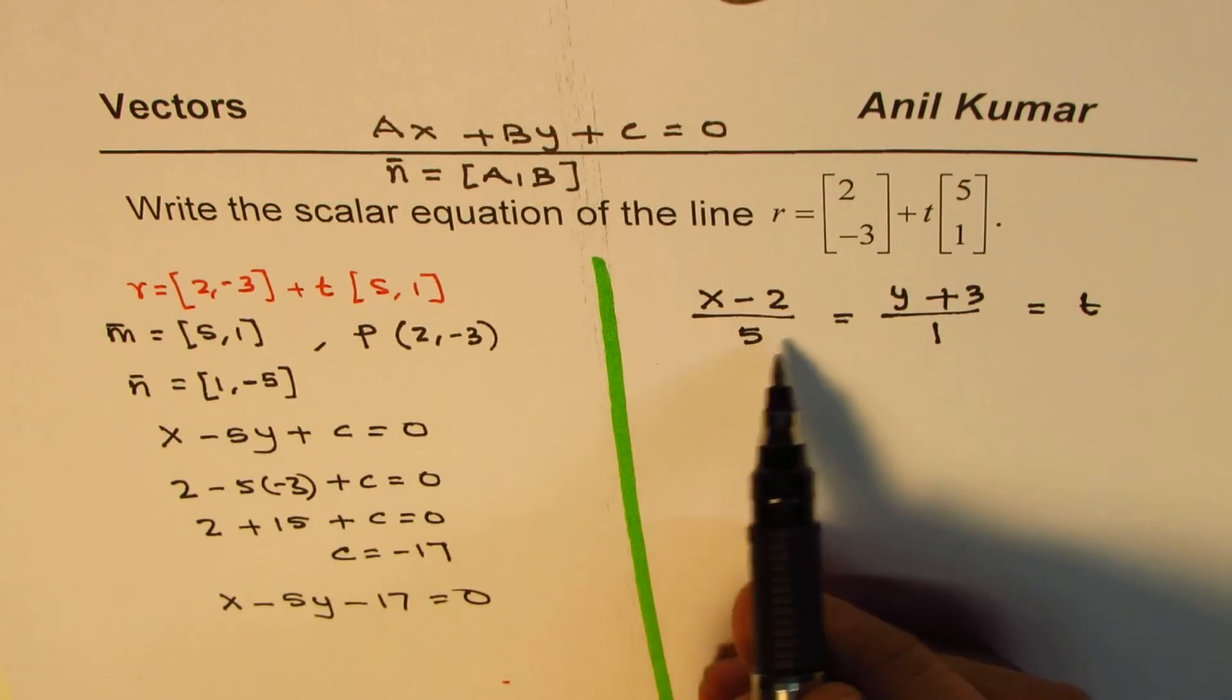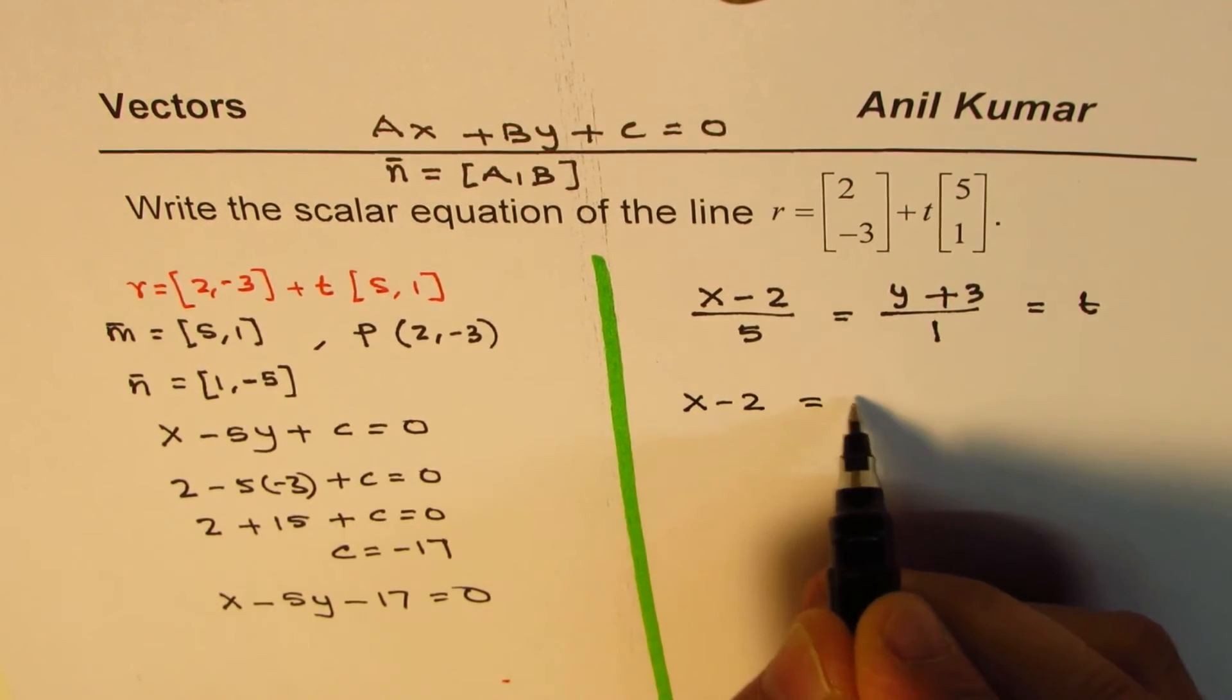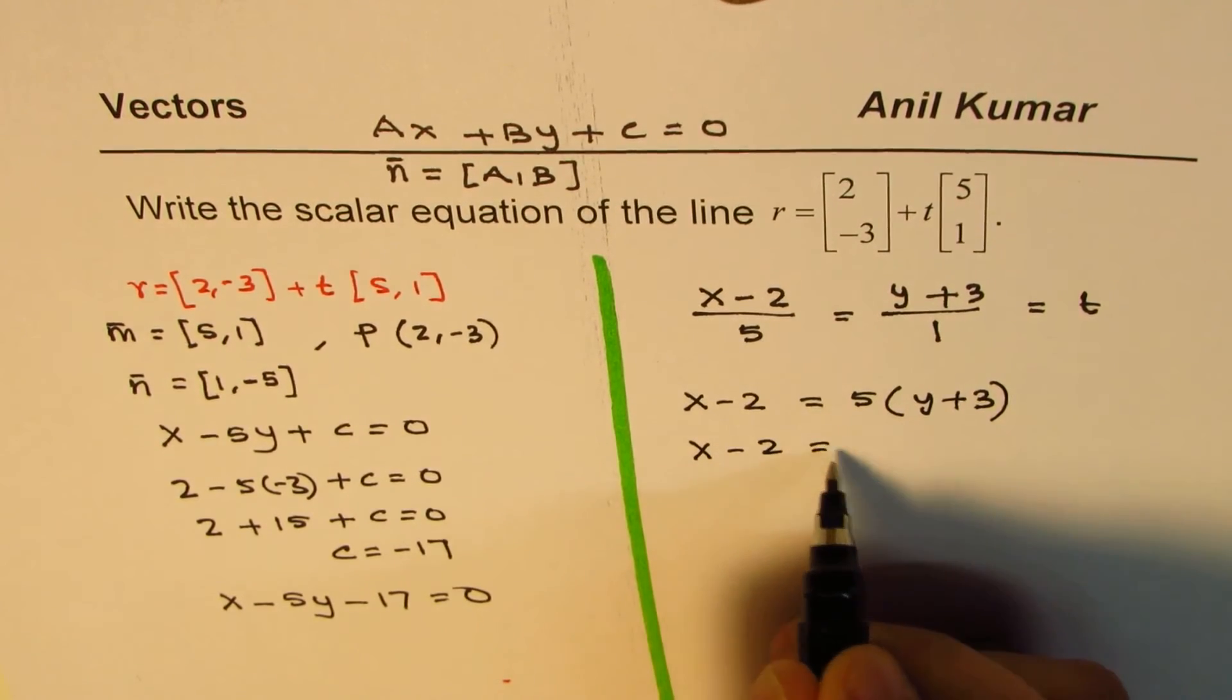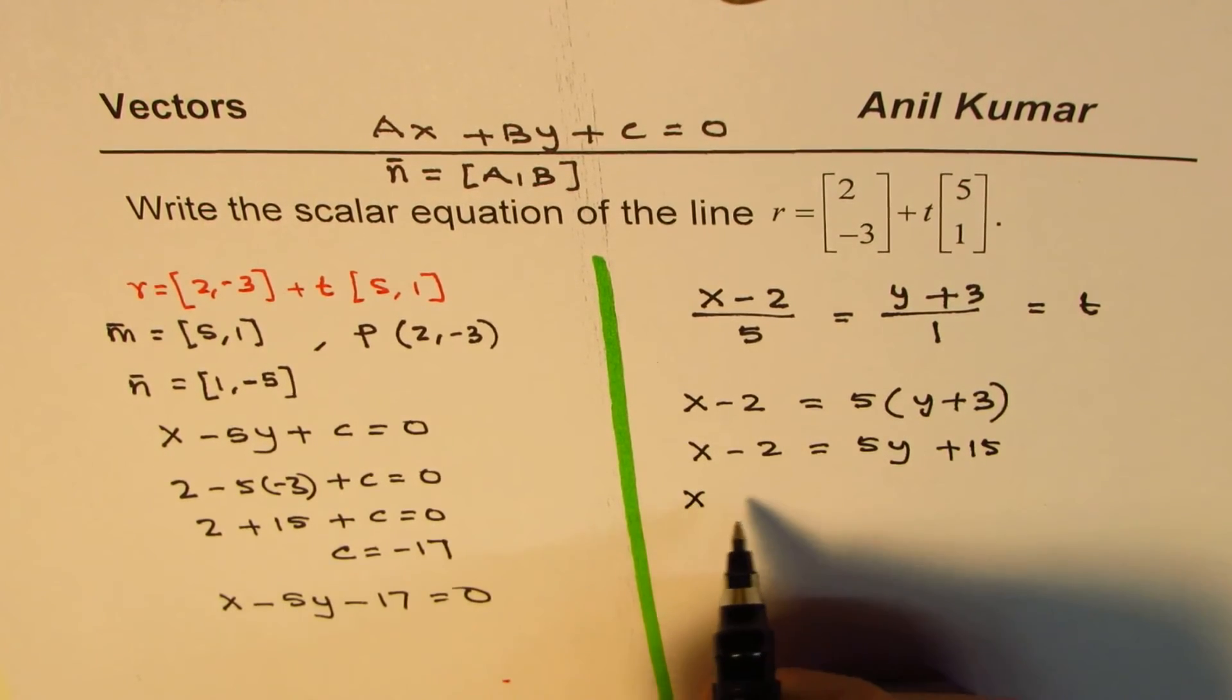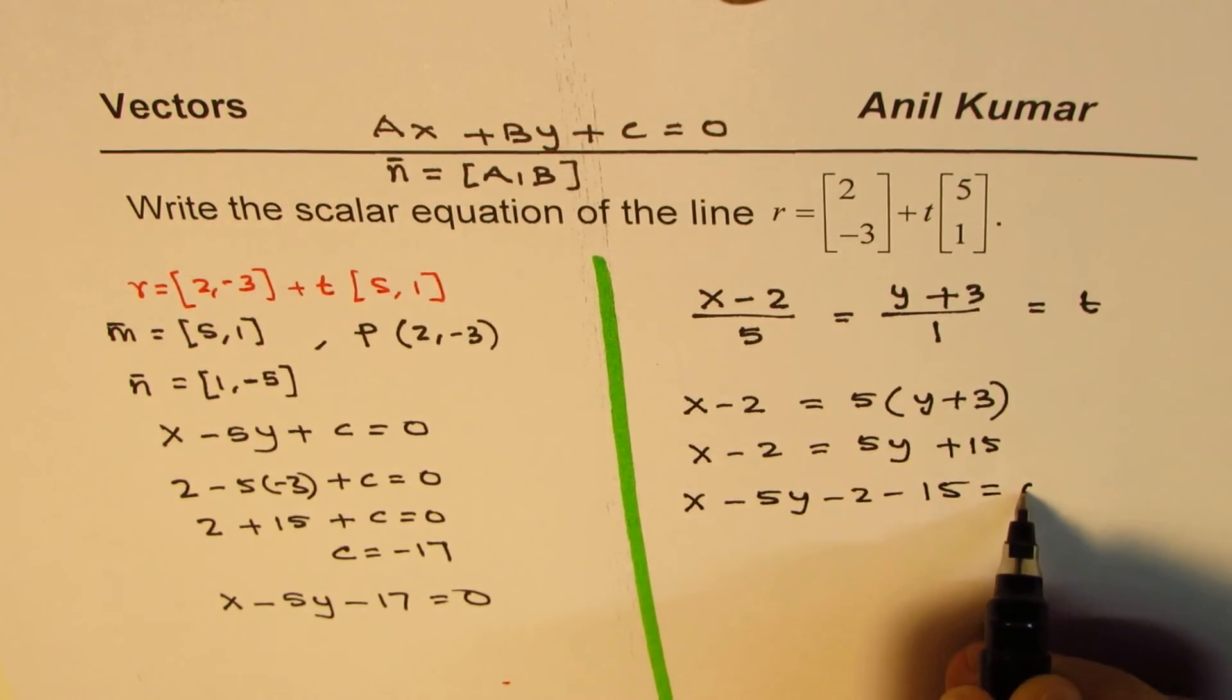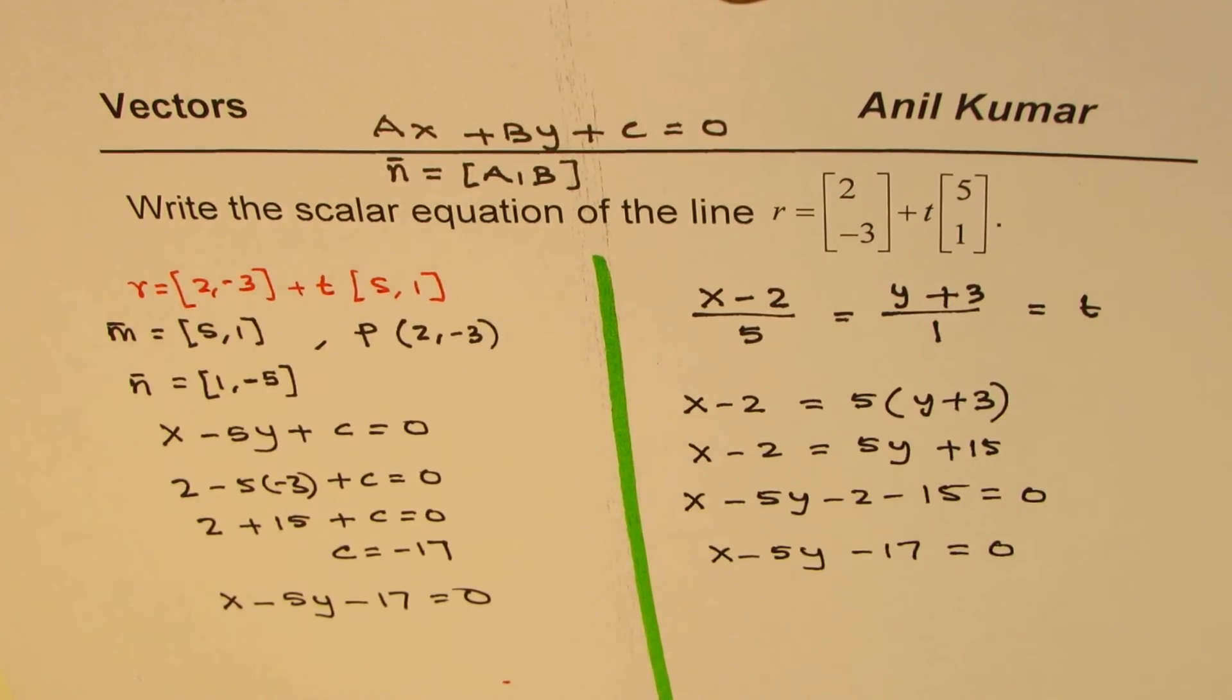So if I cross multiply, I straight away get my scalar equation. I get x minus 2 equals 5 times (y plus 3). Let's expand the right side: 5y plus 15. Bring them to the left side, so we have x minus 5y minus 2 minus 15 equals 0, or x minus 5y minus 17 equals 0. So that is our answer.